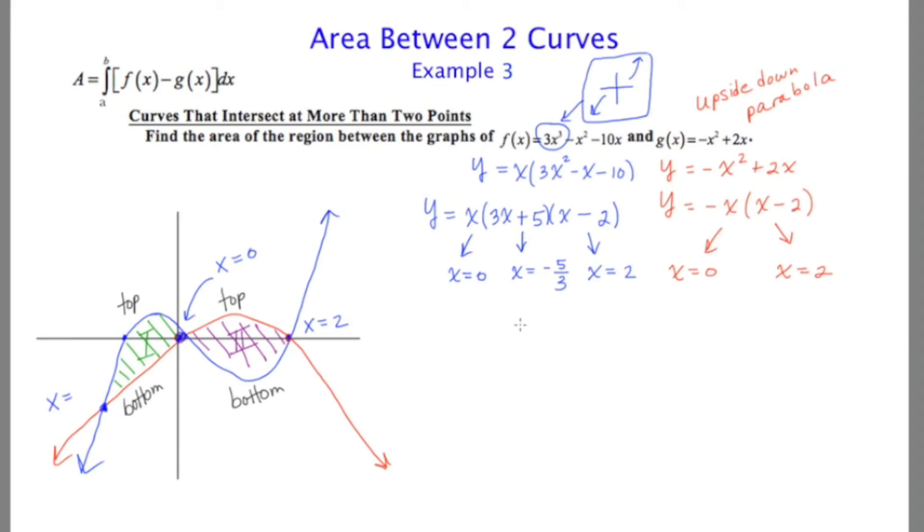In other words, 3x³ - x² - 10x = -x² + 2x. I noticed that -x² is on both sides. That's going to be eliminated. And we end up with 3x³ - 12x = 0.